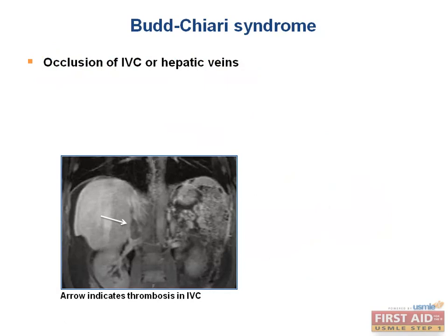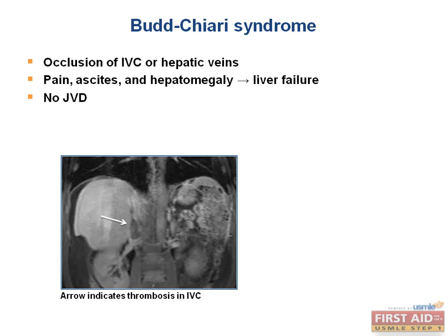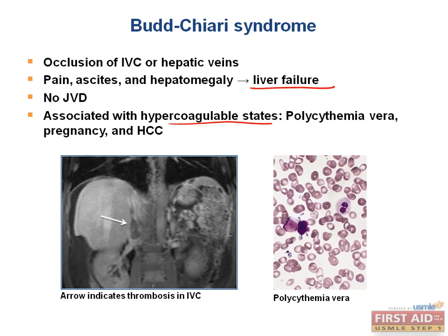Budd-Chiari syndrome develops upon occlusion of the IVC or hepatic veins. Pathologically, the liver develops centrilobular congestion and necrosis, just like nutmeg liver. Here, the arrow shows a blood clot in the IVC. Congestive liver disease results, with findings including hepatomegaly, ascites, abdominal pain, and eventually complete liver failure. Varices can develop, and anastomoses can cause veins in the abdomen and back to stand out. There is no jugular venous distension because of the occlusion. Associations include hypercoagulable states, polycythemia vera, pregnancy, and HCC.